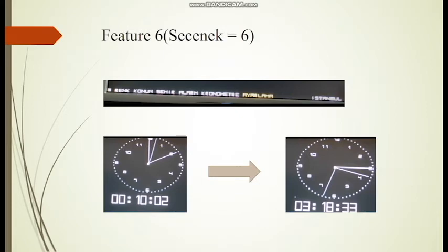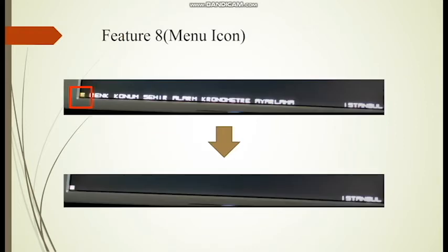In the Ayarlama selection, you can set the clock time. You have to use button 5 and each click changes the setting from seconds to minutes to hours, with the last click representing quick mode. If you click button 2 you go back to selection 5. If you click button 1 you go to selection 0, the menu icon, where you can close the menu by pushing button 5. Pushing button 1 takes you to selection 1.